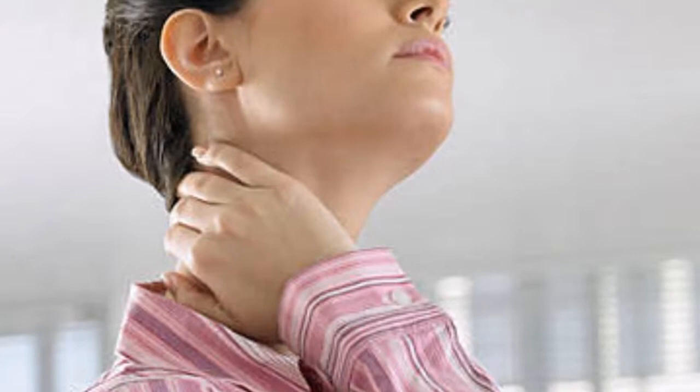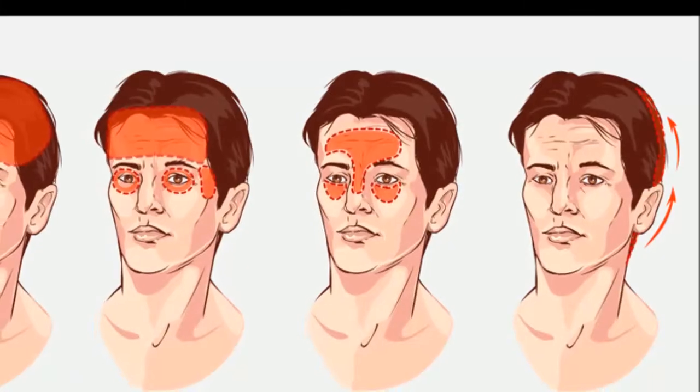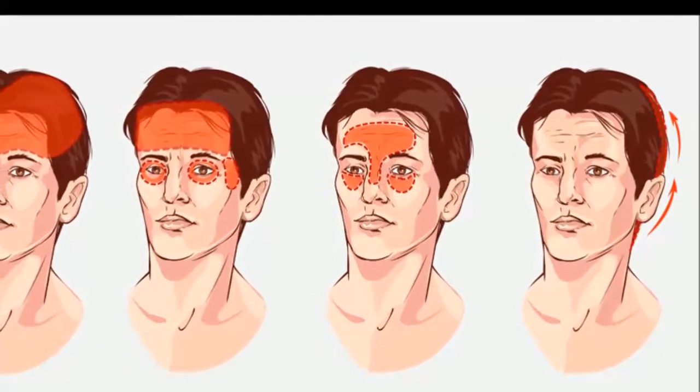1. TMJ Headache. A TMJ headache occurs as a result of problems with the jaw, jaw joint and lower facial muscles. Common triggers include teeth grinding or clenching, tension in the jaw, dislocation of the jaw joint, and arthritis. Although this pain originates in the jaw, it can spread upwards towards the cheeks, temples and ears, or downwards to the neck and shoulder.